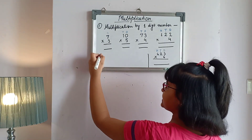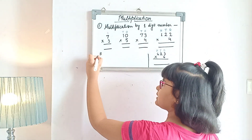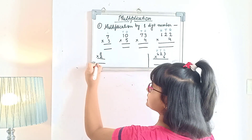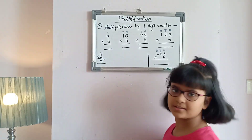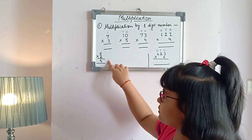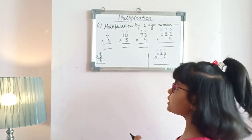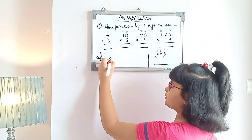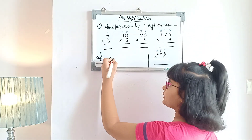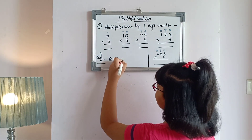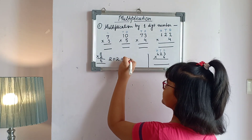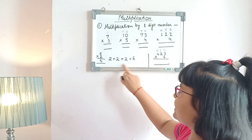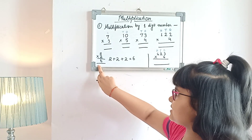Multiplication means repeated addition. For example, 3 multiplied by 2 is equal to 6 — the product is 6. So if we have to do repeated addition, we will add 2 three times: 2 plus 2 plus 2, and the product will come to 6 only. This is repeated addition, and this is the method of multiplication.